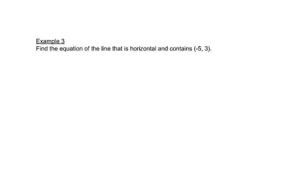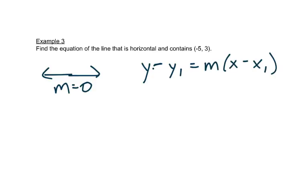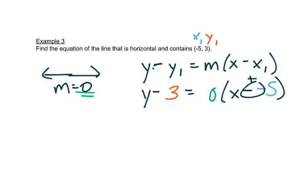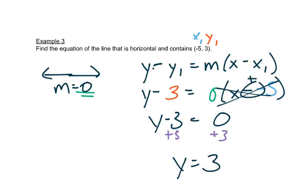This says write an equation for a line that's horizontal and contains the point negative 5, 3. Horizontal means straight across. Remember what the slope is for that. Slope is 0 because it's not steep. If we use y minus y₁ equals m times x minus x₁, here's my slope 0, here's my x₁, and here's my y₁. So I have y minus 3 equals 0 times x minus negative 5. This is really a plus. So I have y minus 3. 0 times anything is 0, so all of that just cancels out because it's times 0. We'll add 3 to both sides, and we get y equals 3. Remember that a horizontal line is always y equals a number.